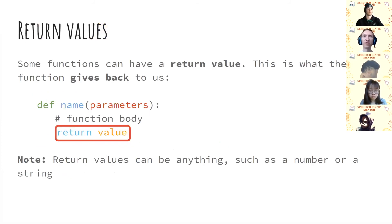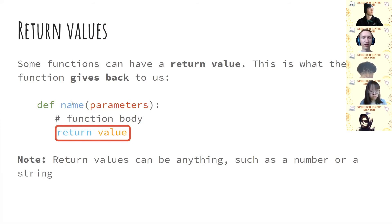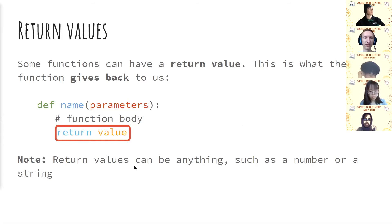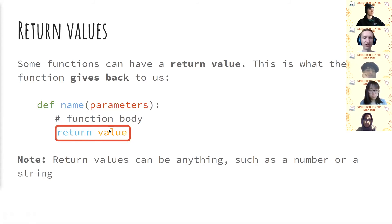Now we're on to the last part of functions — the return values. There was a question about how many parameters you can have: zero, one, two, three — however many you want. So we also have a return value — this is what the function can give back to us. The return part is also optional. We use the keyword return followed by the value we want returned. That value can be anything — a number, a string, or a variable name — anything that becomes a value.